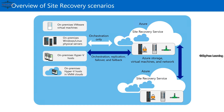The second functionality is orchestration, which provides failover and failback between two locations. Orchestration is an automated configuration and coordination of your systems, applications, and services. In summary, Azure Site Recovery, or ASR, is built around these two core functions.